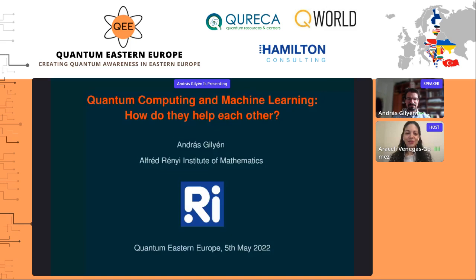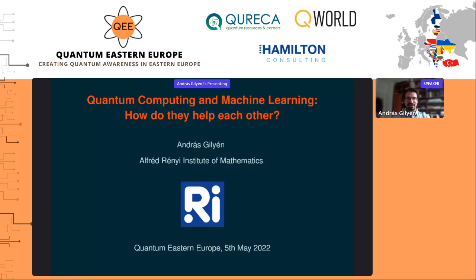Hi everyone and welcome to the first research talk today. It's a pleasure for me to introduce Anders Gillen, who is going to tell us more about quantum computing and machine learning — how do they help each other? This will be mostly an overview talk about the interesting things happening at the intersection of machine learning and quantum computing. There are many interesting things happening there, and I'll try to give a good selection.